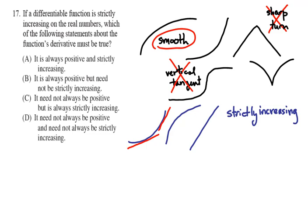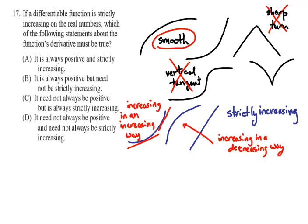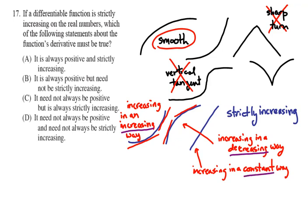The main thing to notice is that there are three ways a function can be strictly increasing. It can be increasing in an increasing way, as in the first example — the slopes are always positive and getting increasingly positive. The second example shows increasing in a decreasing way: the slopes are always positive, but less and less positive. And the third type is increasing in a constant way, where the slopes stay the same.